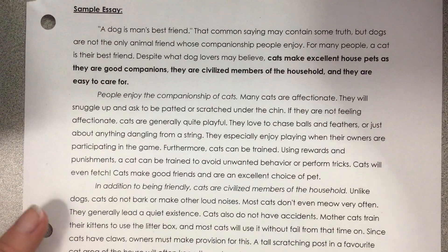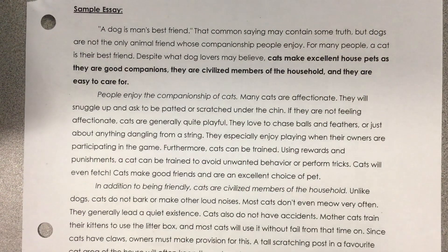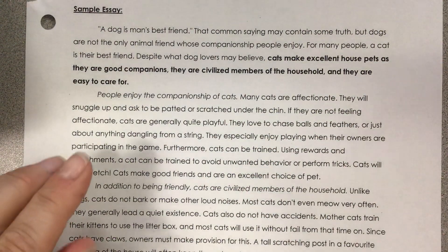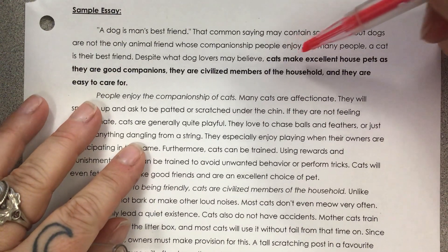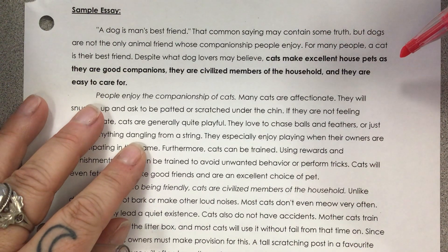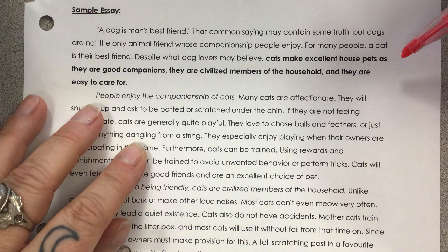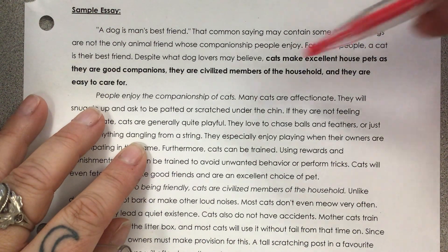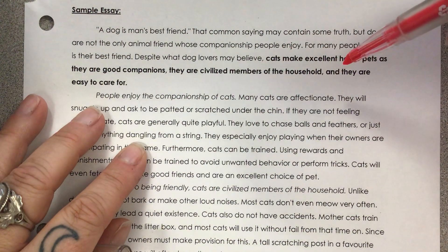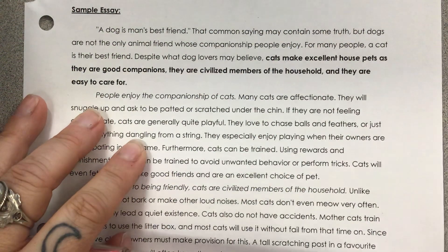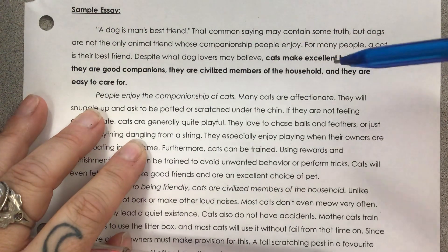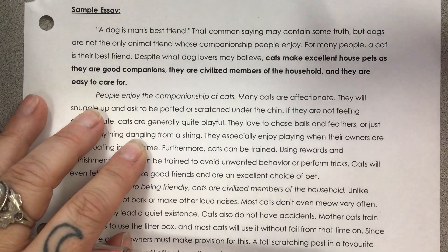The first thing I want to do is highlight the thesis statement. Our thesis statement is bolded and it says: cats make excellent house pets as they are good companions, they are civilized members of the household, and they are easy to care for. From this thesis statement, I know right away what my three body paragraphs are going to be about.